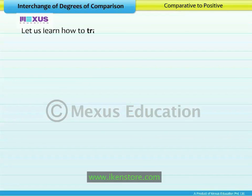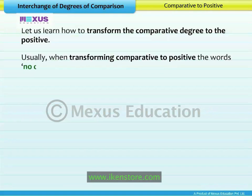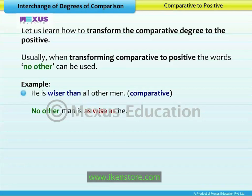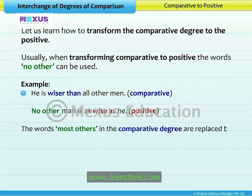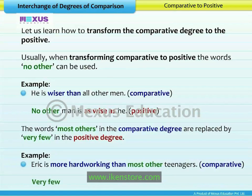Let us learn how to transform the comparative degree to the positive. Usually, when transforming comparative to positive, the words 'no other' can be used. For example: He is wiser than all other men becomes No other man is as wise as he. The words 'most others' in the comparative degree are replaced by 'very few' in the positive degree. For example: Eric is more hardworking than most other teenagers becomes Very few teenagers are as hardworking as Eric.